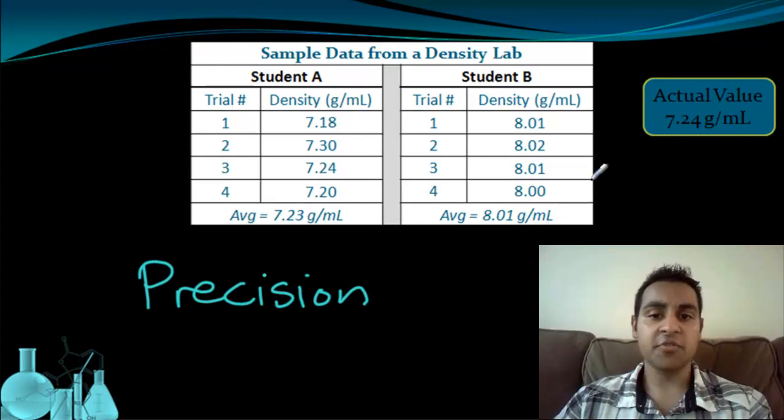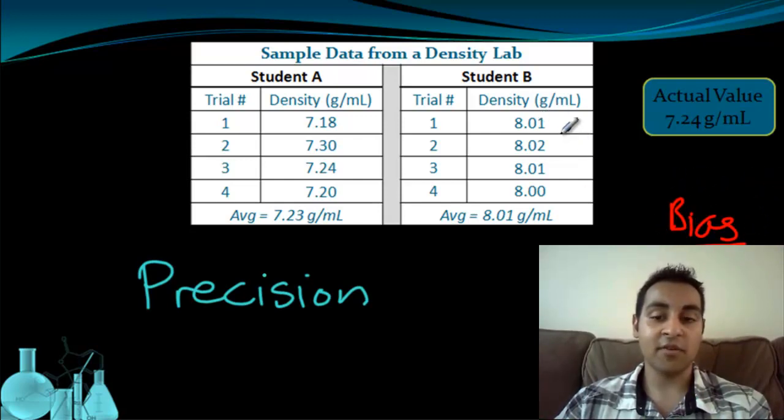Now this particular scenario, where student B is very precise but has low accuracy, would lead us to believe that student B is probably not doing something wrong themselves. It is actually indicative of something that's not error, but we refer to as bias. And this is not bias in the traditional sense that you've heard of it before. This term bias, when we talk about data, means that there's something systematically wrong with what was happening in student B's experiments. For example, the balance...